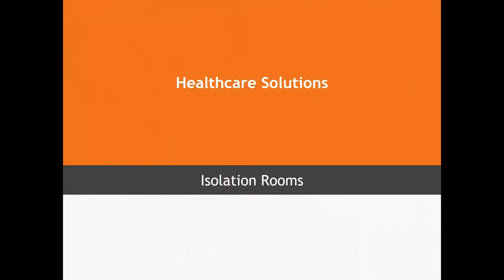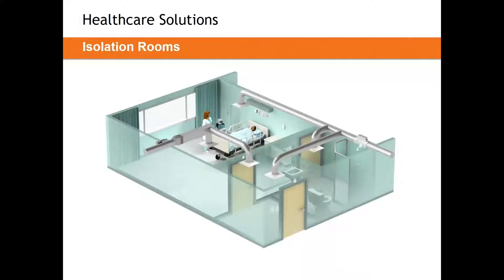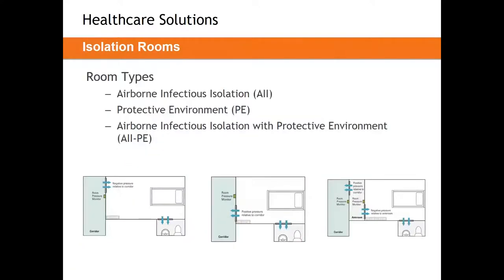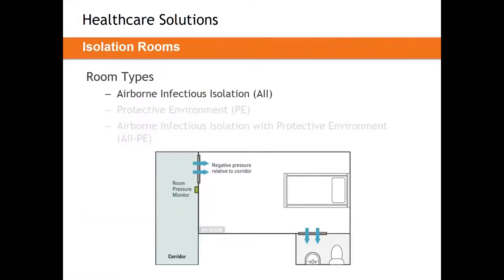Let's start with isolation rooms — likely the simplest application. Most hospitals will have a subset of isolation rooms, some positive, some negative, meant to deal with different types of diseases and patients. Isolation rooms are broken down into three types: airborne infectious isolation, known as AII; protective environments, known as PE rooms; and the combination of the two.